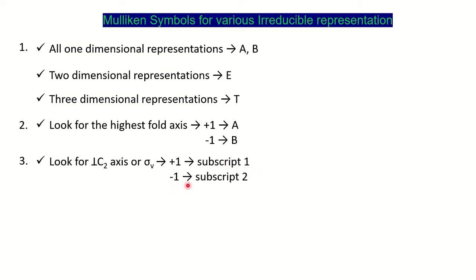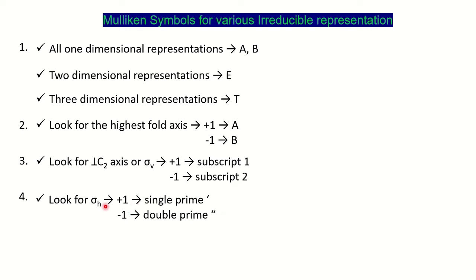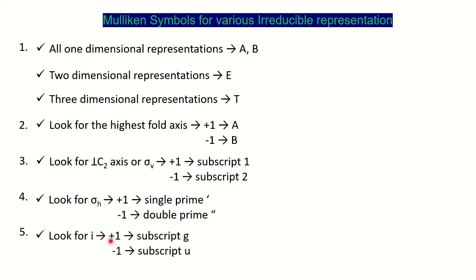Next, if in your character table the molecular plane sigma h is given and the character is plus one, then it is given a single prime. If the character is minus one for sigma h in the character table, then it is double prime. Finally, you have to look if the character table has i — that is, inversion or center of symmetry. If the character is plus one, the subscript will be g; if it is minus one, then it is u.